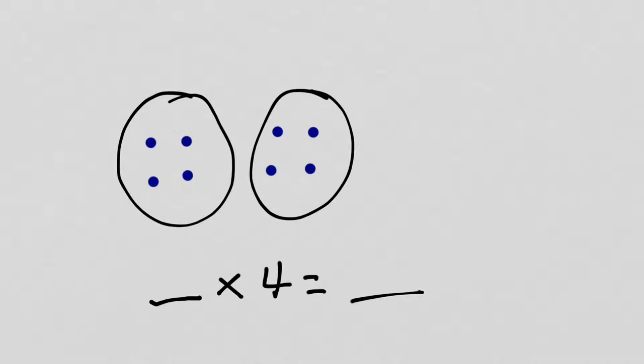Now, over here, I have, instead of three groups of four, I have two groups of four. So, this is 2 times 4 equals 8.